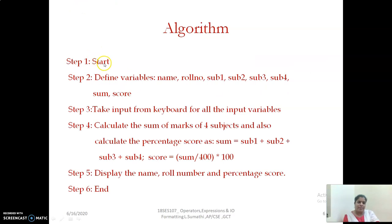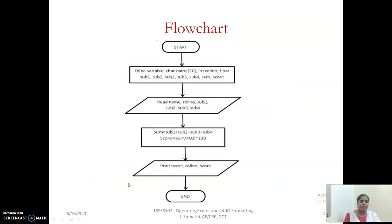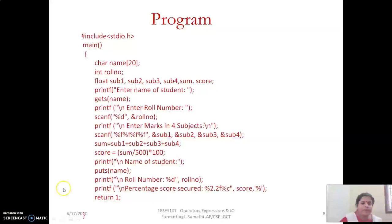First we will write the algorithm. You have to start the program. Define variables: name, roll number, and all variables to store the four subject marks, a variable to store their sum, and a variable to store the average. Then take input from the keyboard for all the input variables. Then calculate the sum of all four subjects and calculate the percentage - divide by 400 and multiply by 100. Then display the name, roll number, percentage, and score and end your program. The flowchart is the pictorial representation: declaration is in a process statement, read and display in a parallelogram, the task in a rectangle.